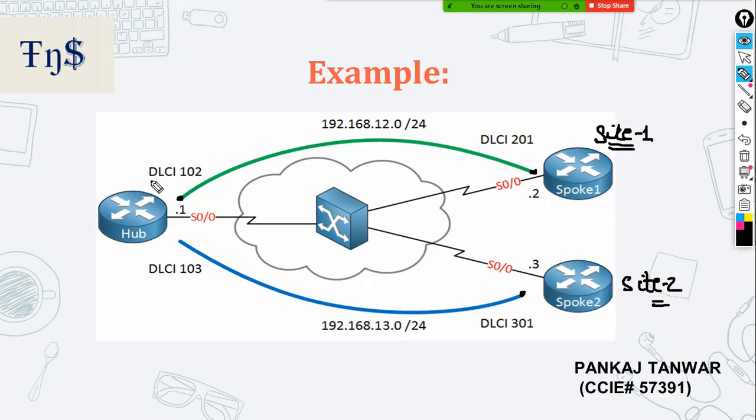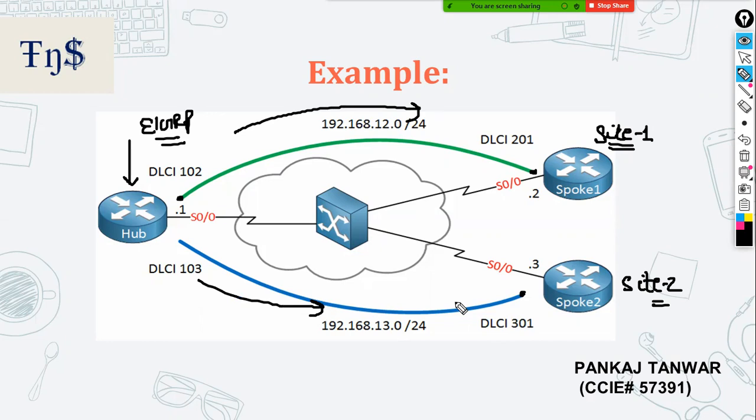Once the ISP provided the flat L2 connectivity, it was your job to run any dynamic routing protocol to exchange routes. For example, at the hub location you might run EIGRP between the hub and remote locations. The ISP just provided the connectivity between your different sites — configuring devices, putting the routing protocol, and exchanging information was your responsibility.